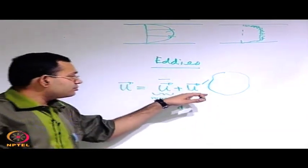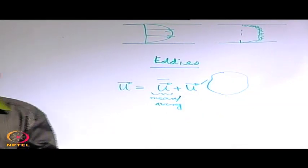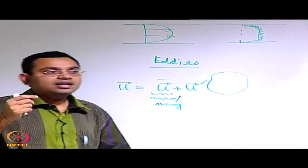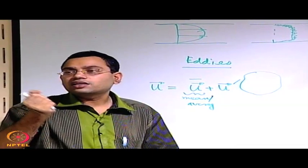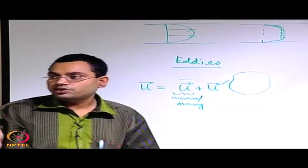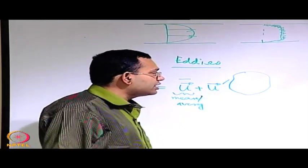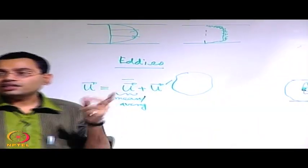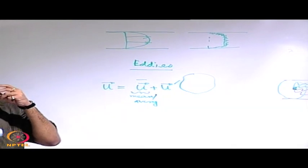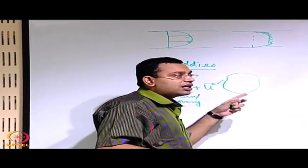This random fluctuation exists because there are disturbances in the flow. The disturbance in the flow may be instigated by the roughness elements of the wall, or by slight changes in the inlet conditions of flow through a pipe or a tube — and that is how this fluctuation is present. When this fluctuation is there, these fluctuations create rotating structures of different length scales in the flow, and such rotating elements are called eddies.